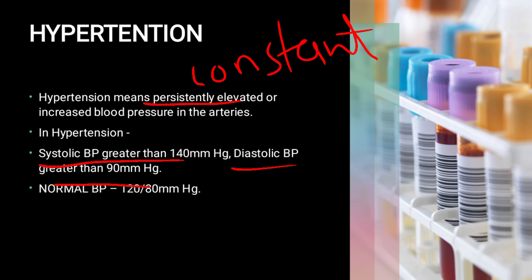These values are based on the average of two or more blood pressure measurements taken in two or more contacts with healthcare professionals. Normal blood pressure is 120/80 mmHg, where 120 is the systolic and 80 is the diastolic blood pressure.